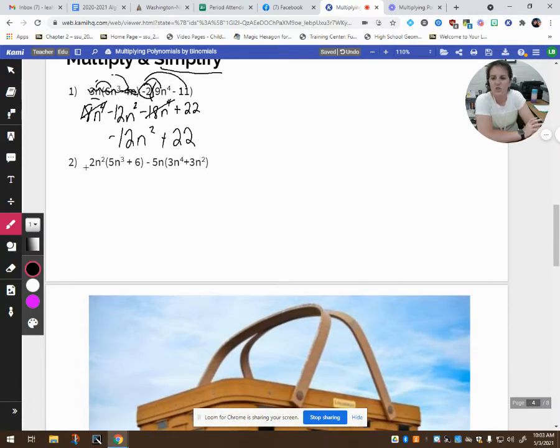Pause the video and try number 2. 2n squared times 5n cubed gives me 10 n to the fifth. 2n squared times 6 gives me 12n squared. Done with this first set.